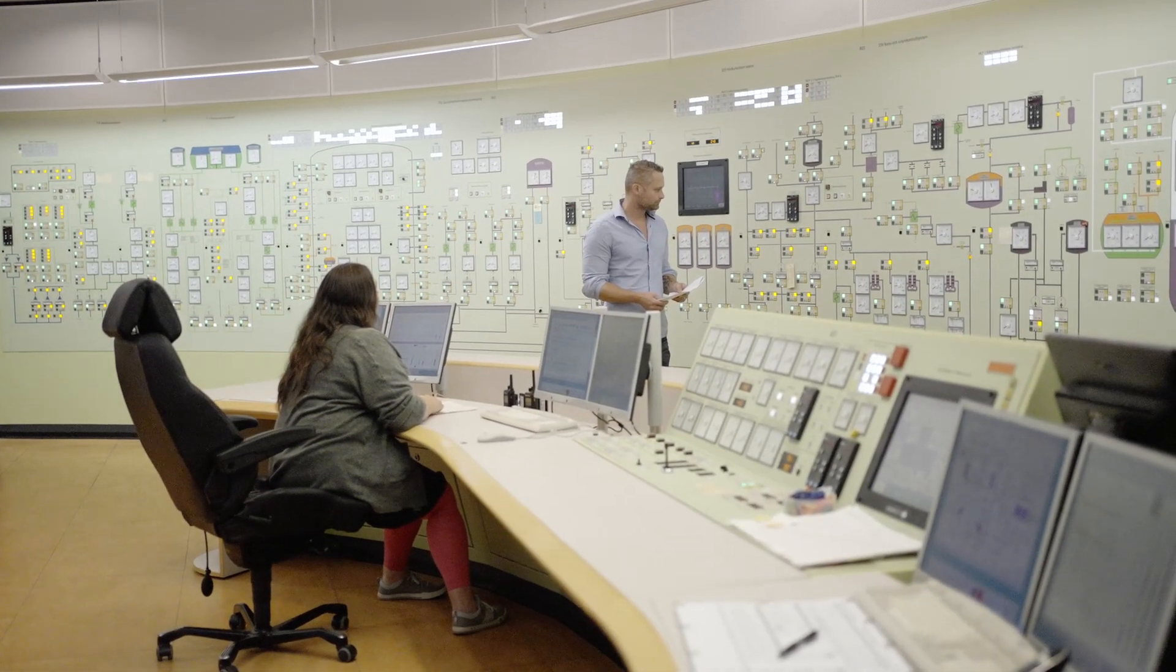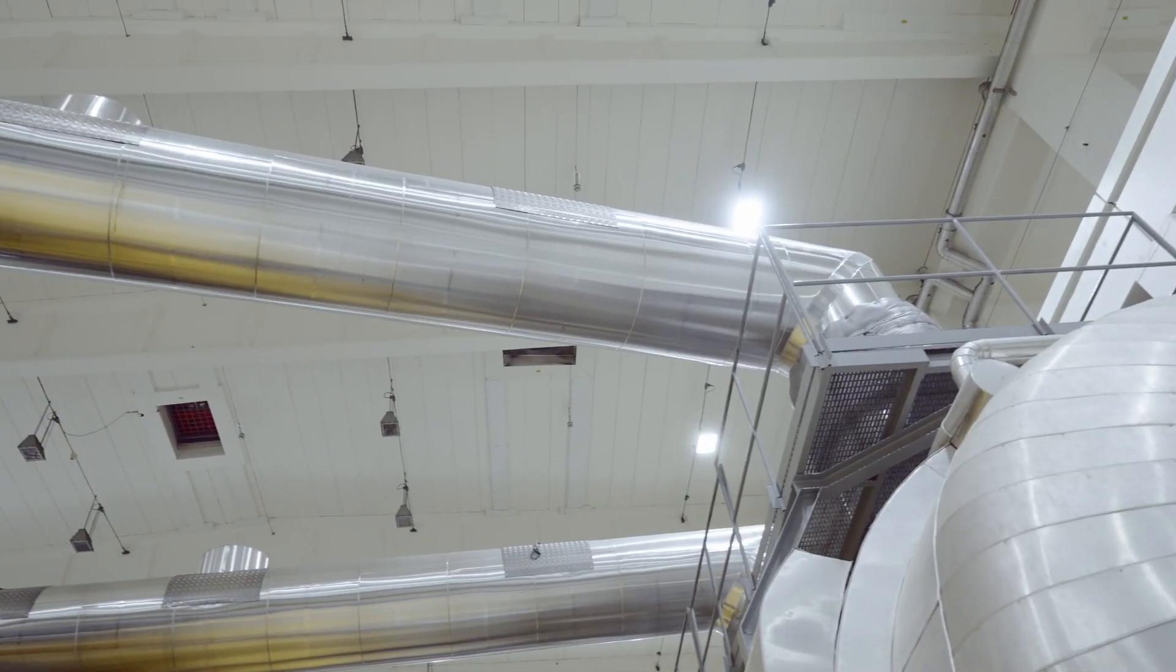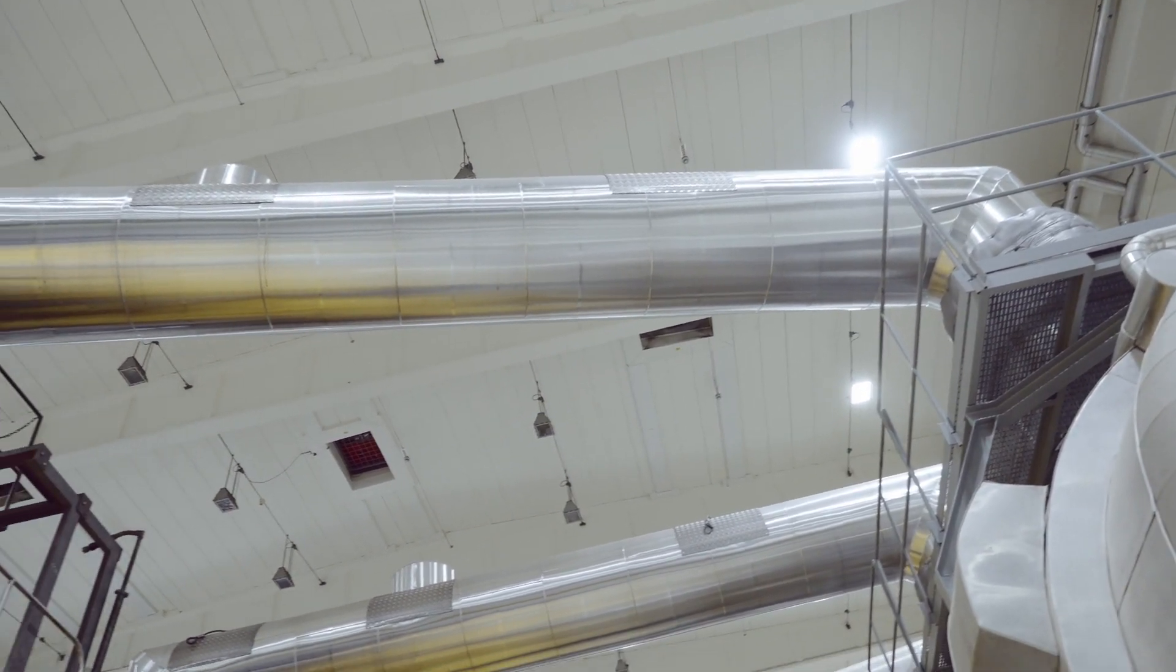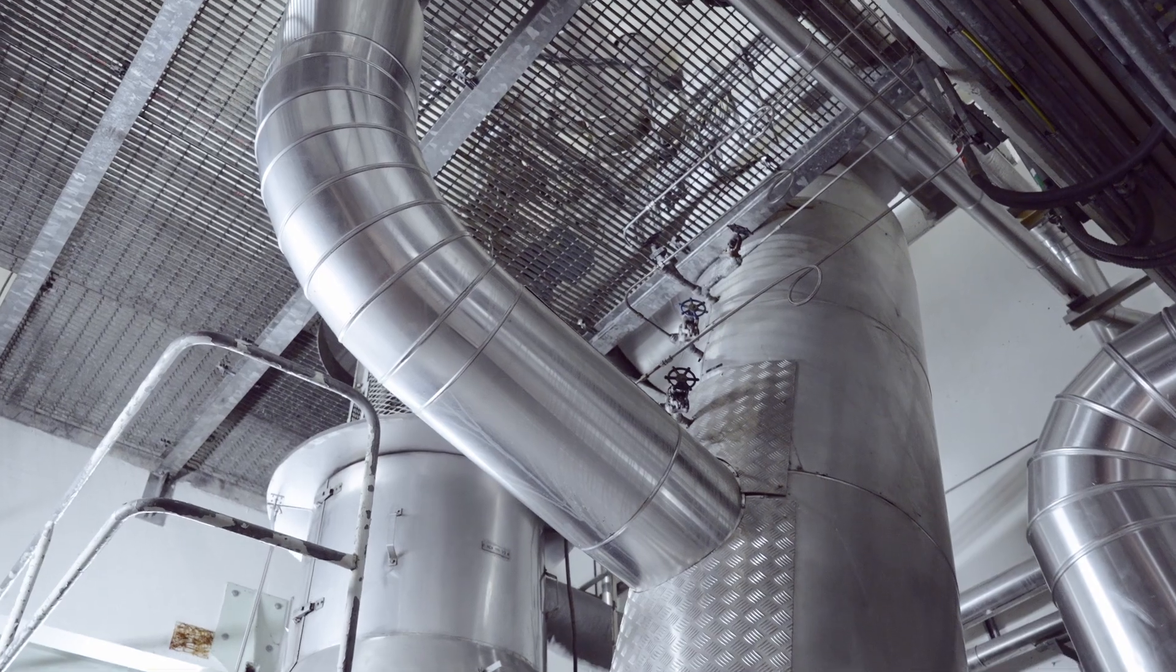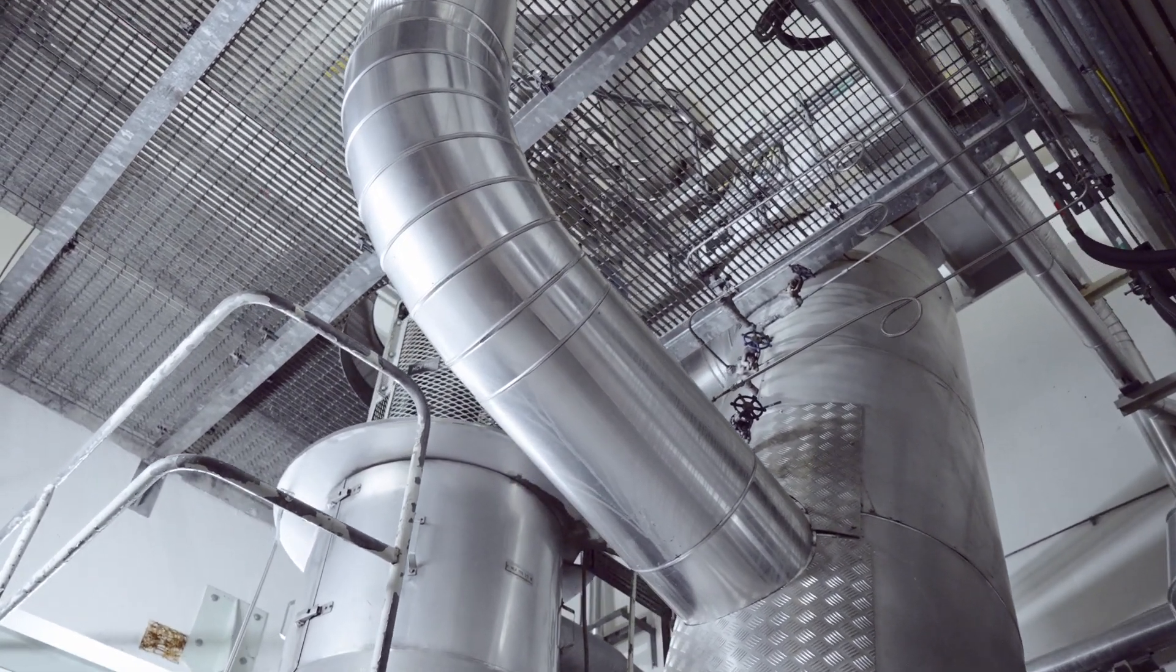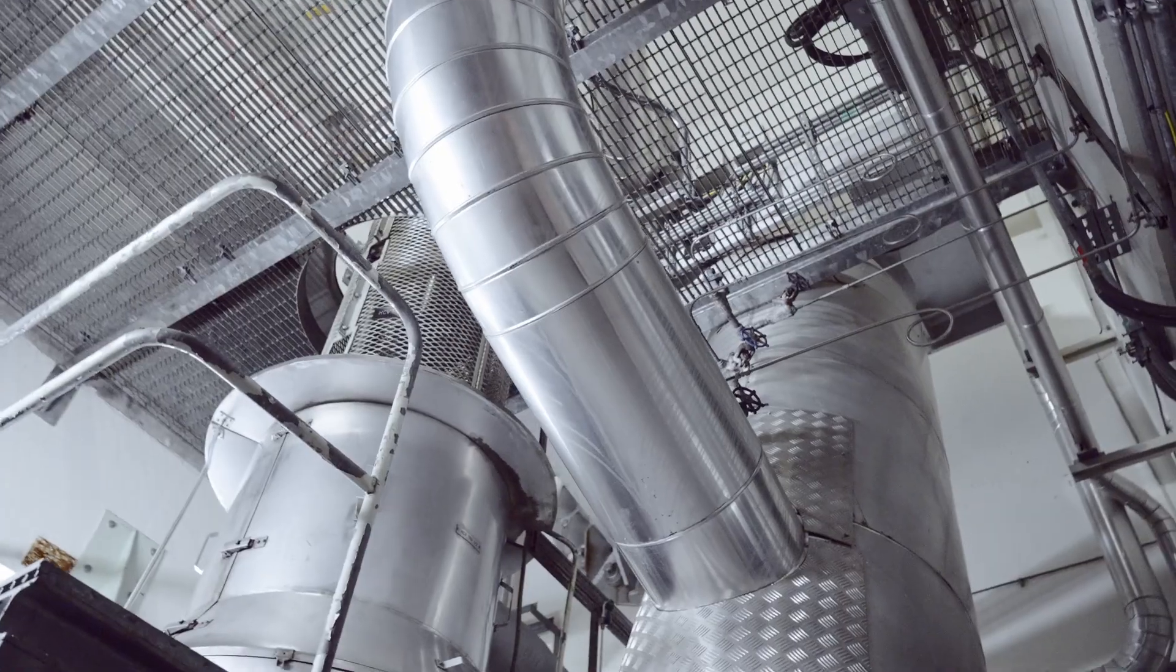While the heavily protected reactor generates energy, the turbine room transforms it into power. At one end of the room, water in two sets of pipes crosses paths, without actually meeting.